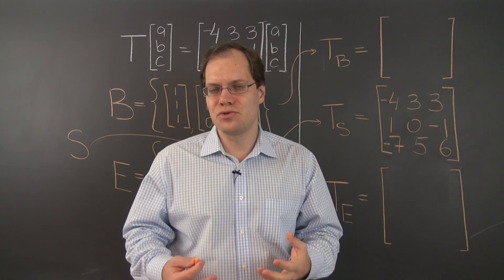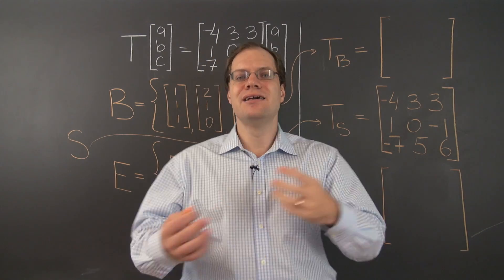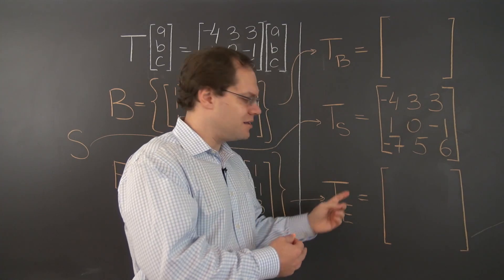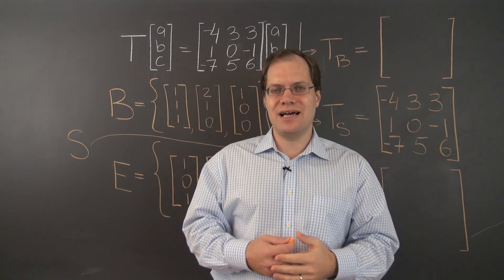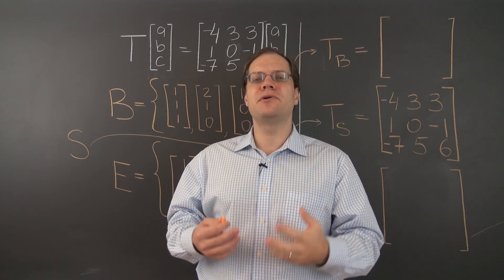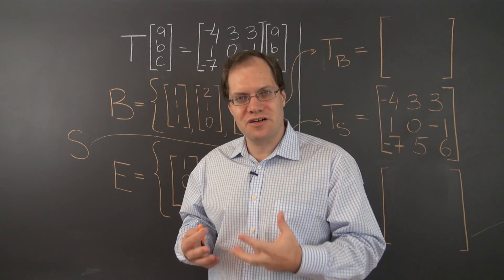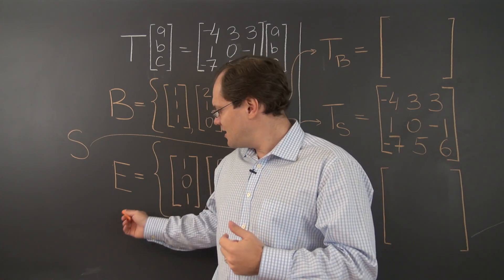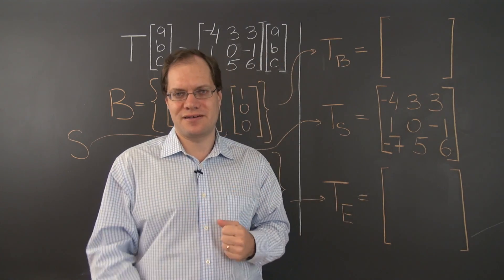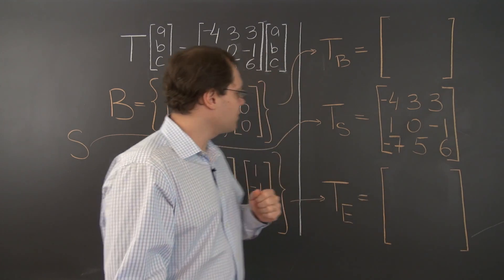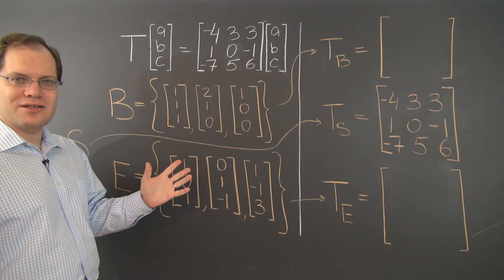This of course is a very general rule that an eigenbasis leads to a diagonal matrix with the eigenvalues on the diagonal. But before we show it in the very general case, it's nice to see it in a specific case. All right, so let's go ahead and do it.